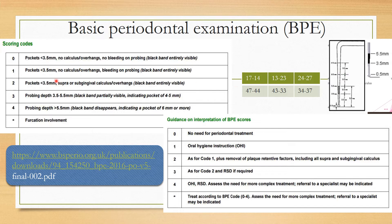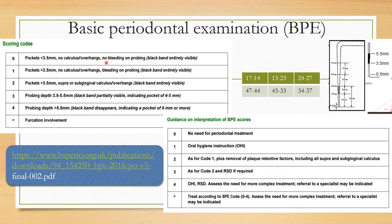Code 0 denotes pocket less than 3.5 mm, no calculus or overhangs, no bleeding on probing — the black band is clearly seen. Code 1: pocket less than 3.5 mm, no calculus, with bleeding on probing. Code 2: pocket less than 3.5 mm, with calculus or overhangs — black band entirely visible for 0, 1, 2. Code 3: probing depth between 3.5–5.5 mm, black band partially visible, indicating pocket depth of 4–5 mm — mild periodontitis. Code 4: probing depth greater than 5.5 mm, black band totally disappears, indicating pocket depth of 6 mm or more. If there is any furcation involvement, it is noted as a star.